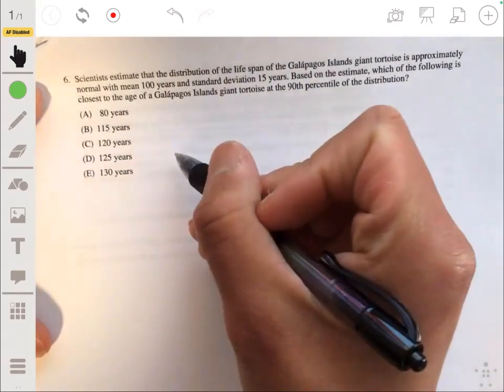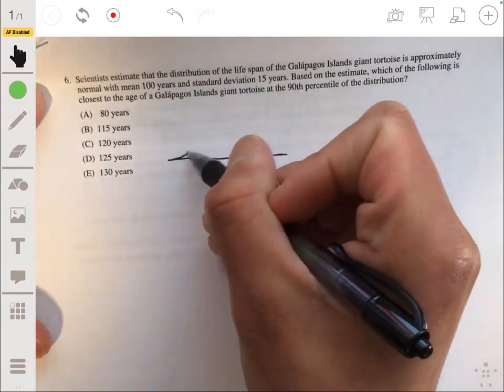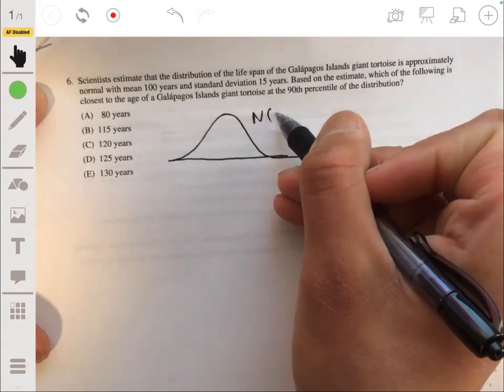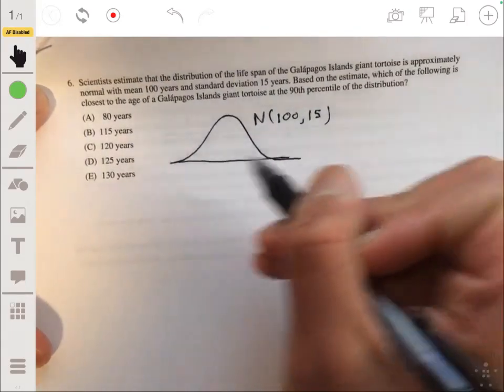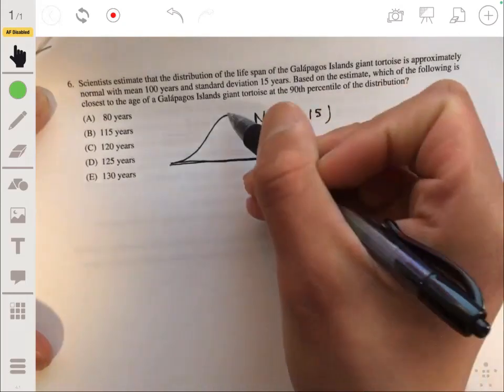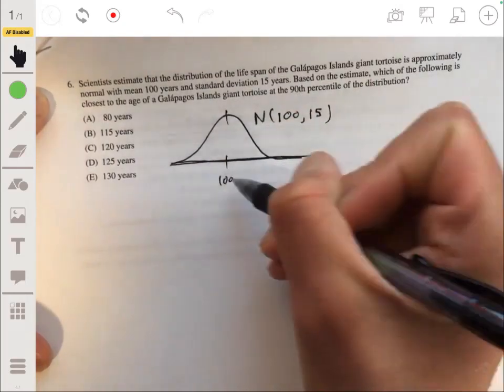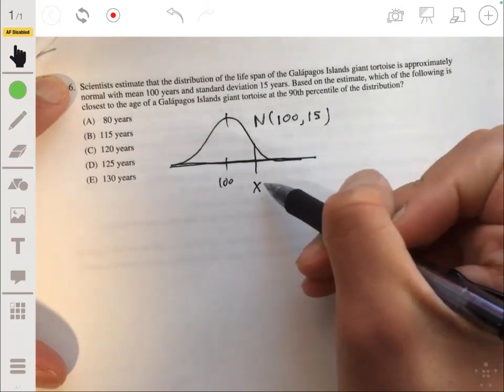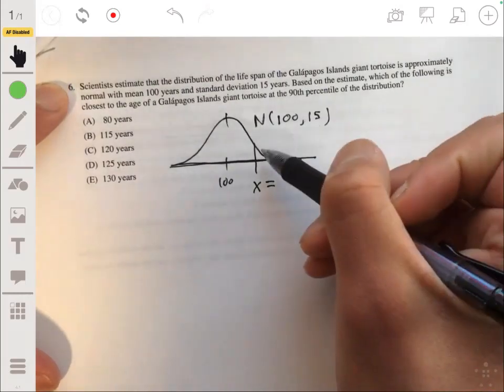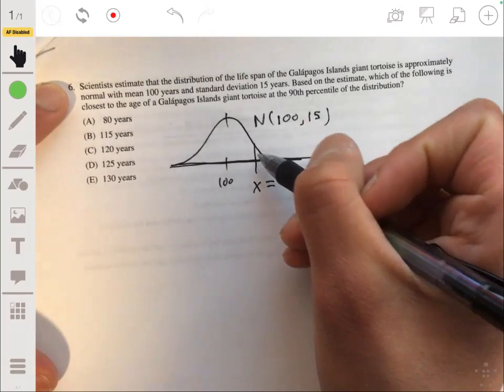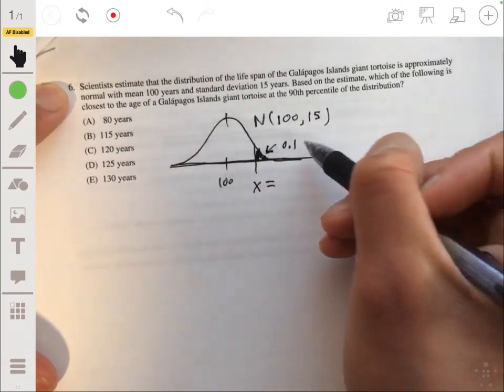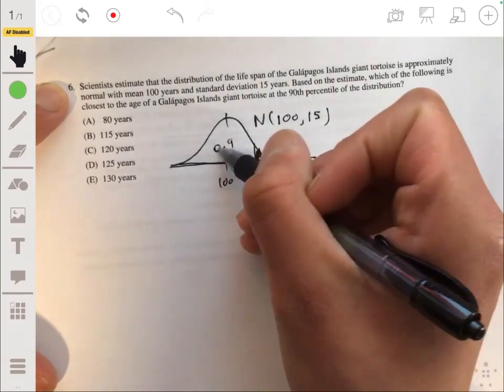Okay, so let's draw a little sketch of the normal distribution here. It's normal with mean of 100, standard deviation of 15. So 100 is going to be in the middle here. And we essentially want to find the value, let's call it x, at the 90th percentile, meaning that there's only going to be 0.1 area to the right or 0.9 area to the left.